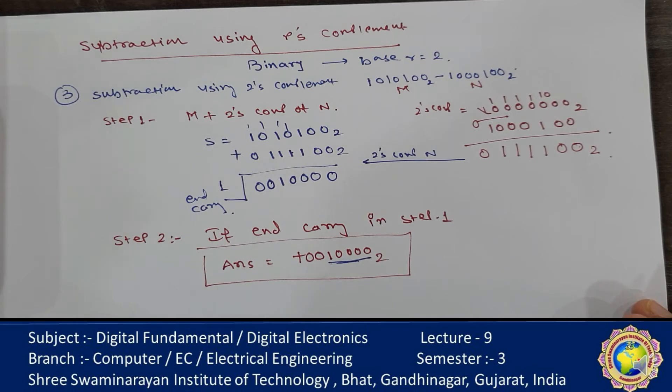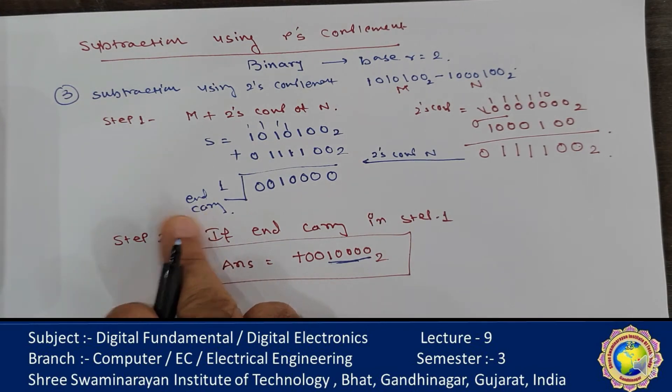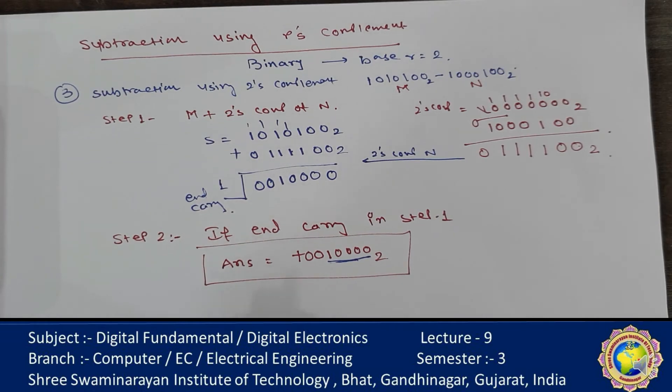Since there is an end carry, in step 2 we discard it, and the answer is positive: +0100010 binary.